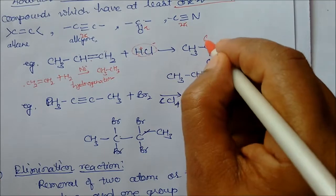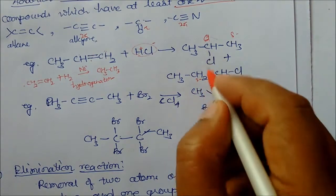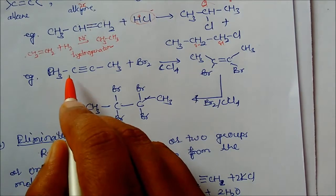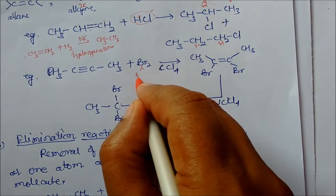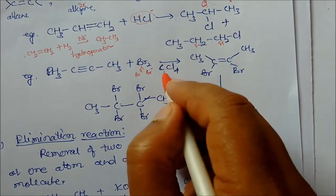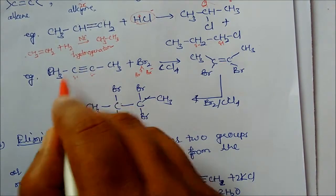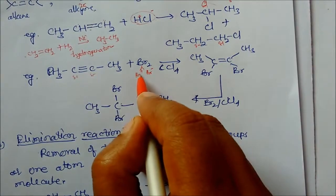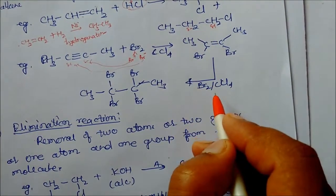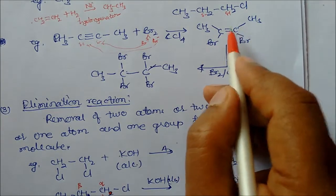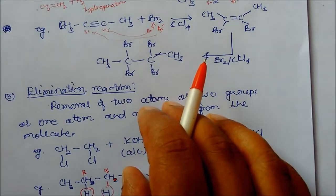If one carbon is positive, Cl attacks; the other is negative, so hydrogen attacks. In this way we get two products. Similarly, CH3-C≡C-CH3 plus Br2 in CCl4 solvent: Br2 splits into Br+ and Br-. The CCl4 separates these ions. Depending on which carbon is negative or positive, Br+ or Br- attacks accordingly, giving two products. Repeating the reaction again gives a fully brominated product with two Br atoms added. This is your addition reaction — we are adding a reagent onto the substrate.